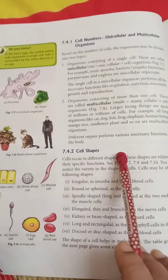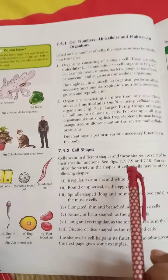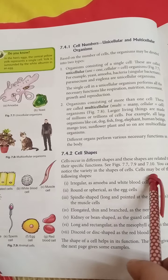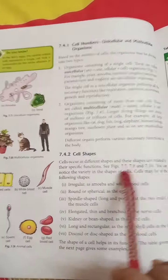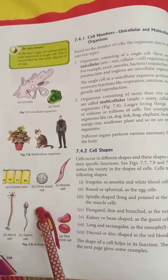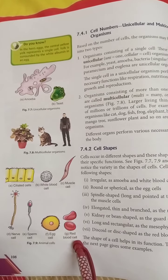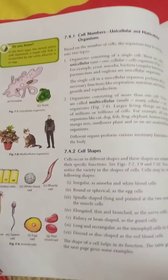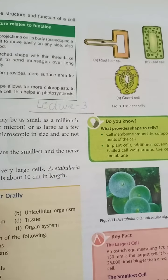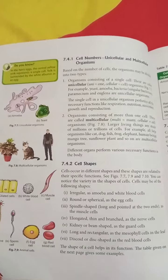Now coming to the next topic — cell shapes. What are the shapes of cells? Cells occur in different shapes and these shapes are related to their specific functions. Now notice the different variety of cells. This is a ciliated cell. Then we have white blood cells. This is a muscle cell, this is a nerve cell, this is a sperm cell, this is an egg cell, this is a red blood cell. Here we have root hair cell, leaf cell, and guard cell. These are different types of cells — they have different functions depending on their shapes.